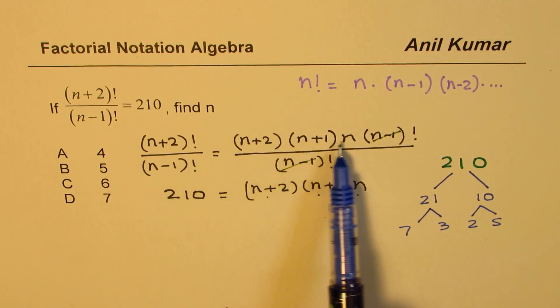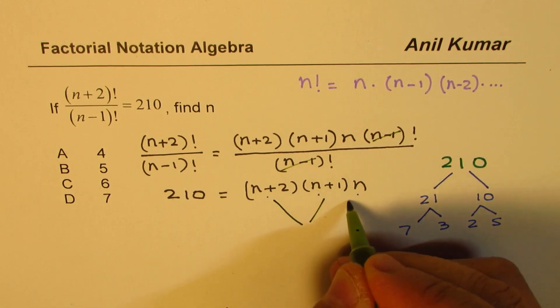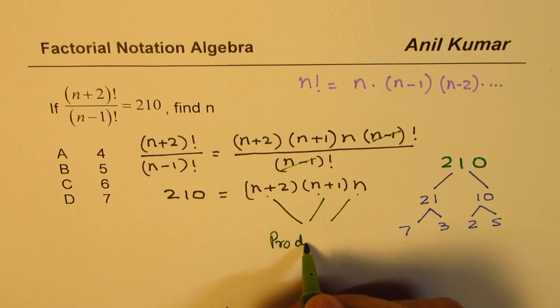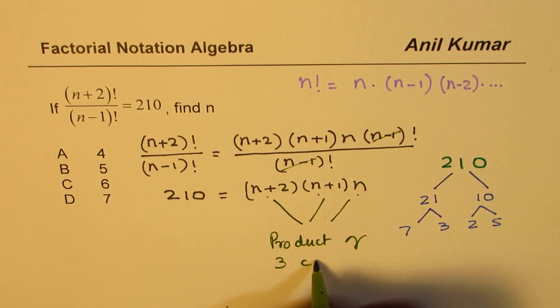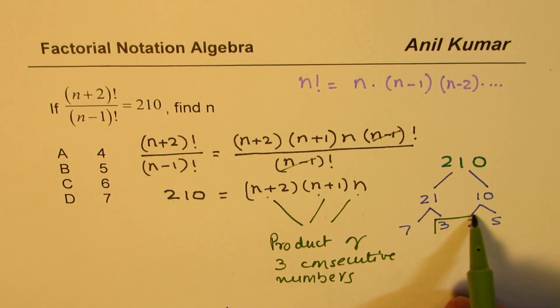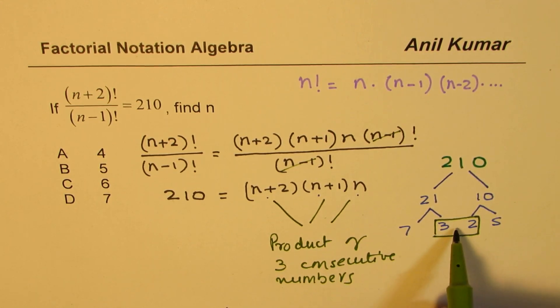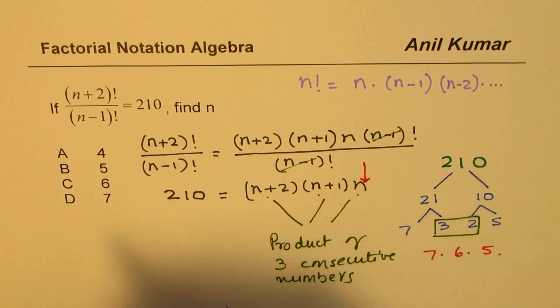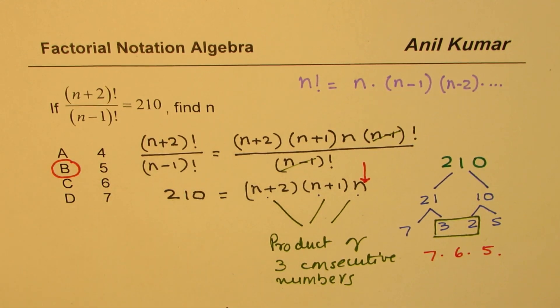We are looking for three consecutive numbers. See this as product of three consecutive numbers. From here, these factors remind you that this could be written as 5 times 6 times 7. The lowest number in 5, 6, and 7 is 5. If you compare, that means n should be equal to 5. That is how we could easily solve this question.